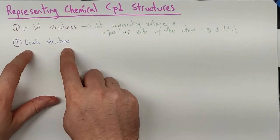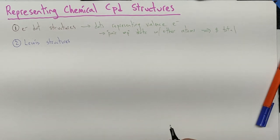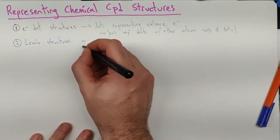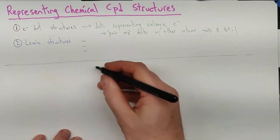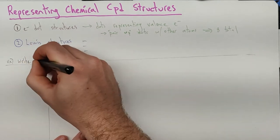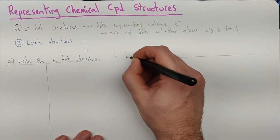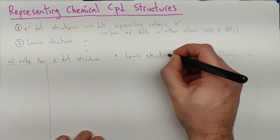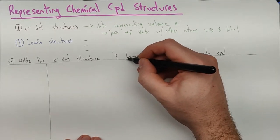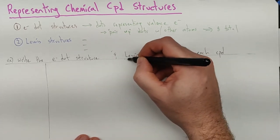I'll go back and talk about Lewis structures once we've drawn some electron dot structures. Let's start with something we saw previously — water. I want to write the electron dot structure and the Lewis structure for each compound. I'll need some room here for the electron dot structure and some room here for the Lewis structure. We'll draw them big to save ourselves confusion.